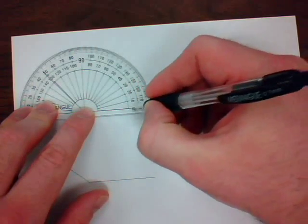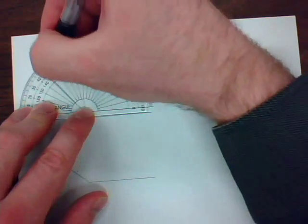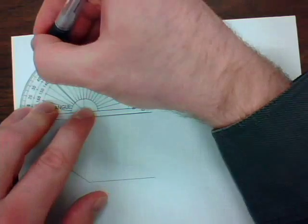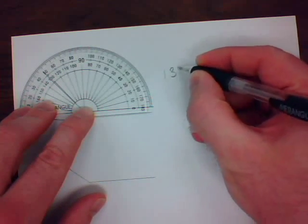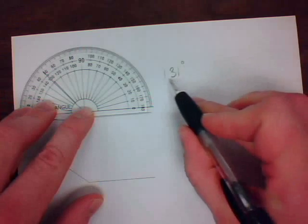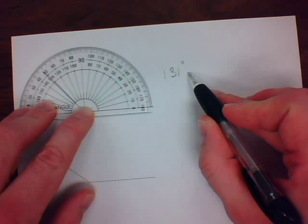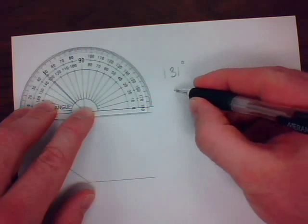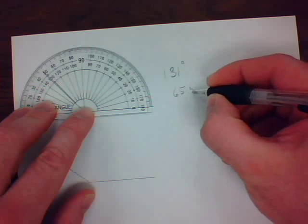Since this is lined up, this is zero, using the inside set of numbers. It's about 131 degrees. Divide this in half, which will give me 65.5 degrees.